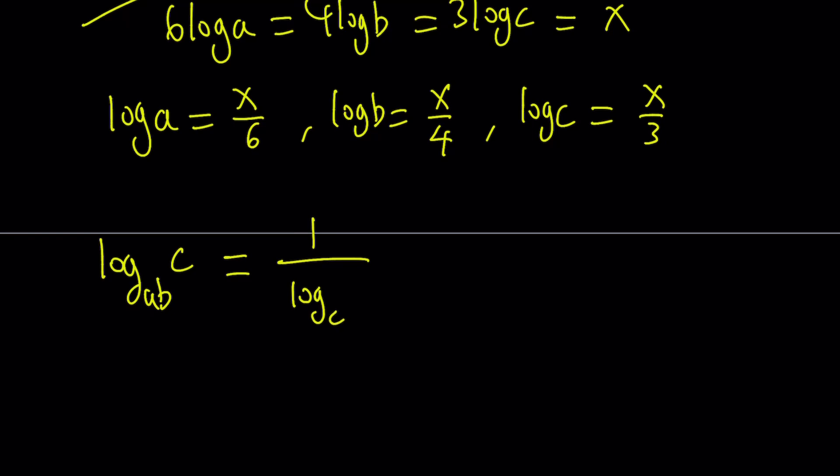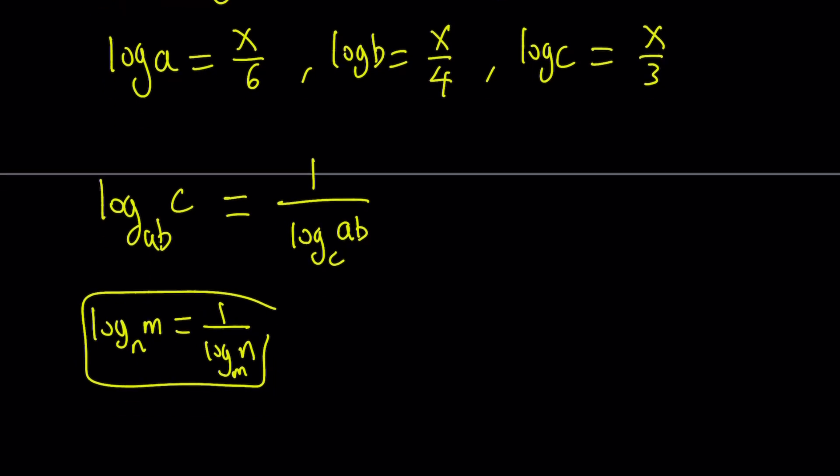By using properties of logs, I can write this. In other words, if you have log M with base N and you have log N with base M, they're reciprocals. Basically, this is what the property says.